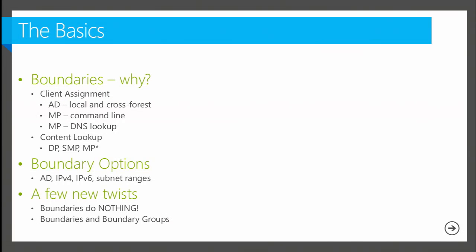Why do we care about boundaries? Really, it's two categories. The first is client assignment. Client assignment happens either manually — there are really four ways it can happen. Either manually, where you specify the site you want your client to join and boundaries don't matter so much. Or if you are in an environment where you want to use client assignment equals auto, then we do leverage boundaries. And boundaries being configured properly is critical to helping your client know where to assign.